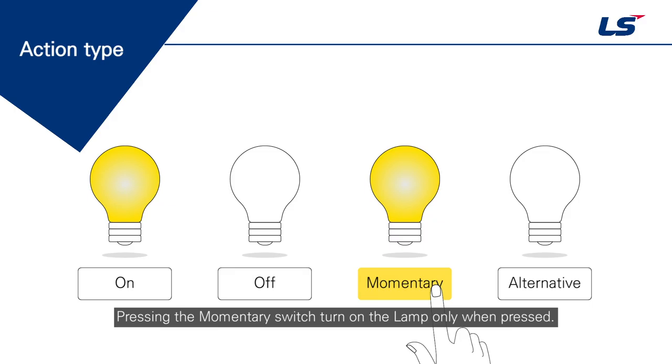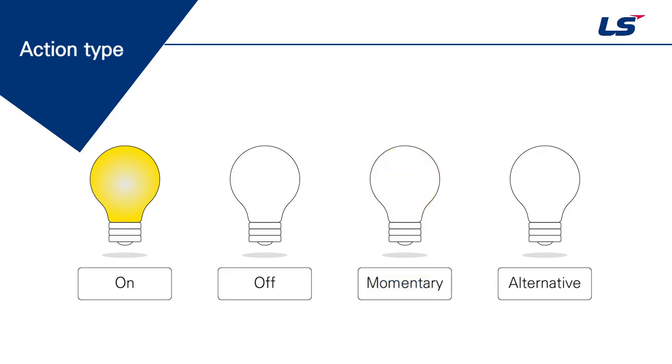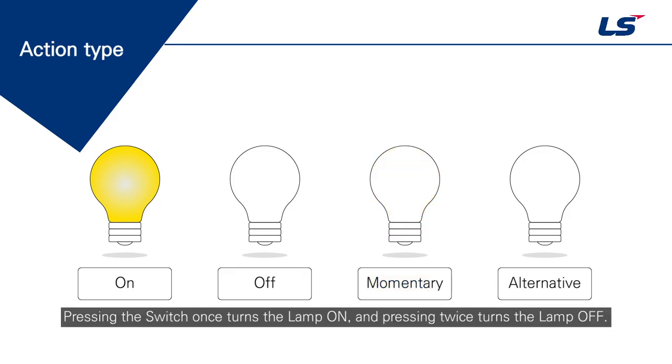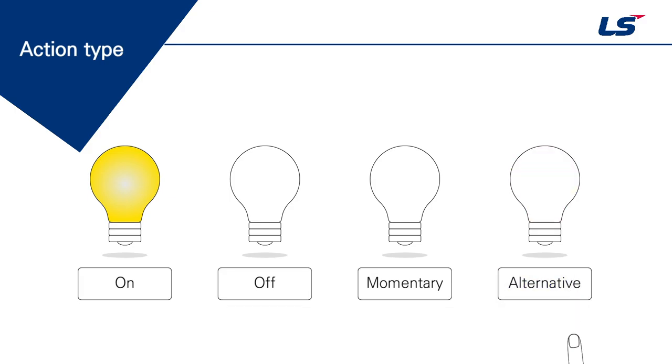Pressing the momentary switch turns on the lamp only when pressed. Pressing the switch once turns the lamp on, and pressing twice turns the lamp off.